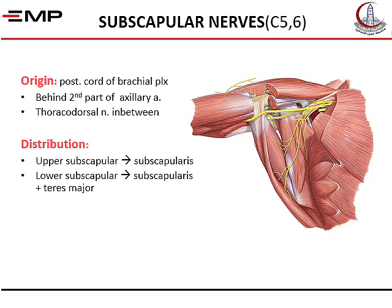The subscapular nerves are upper and lower subscapular. They arise from the posterior cord of the brachial plexus, behind the second part of the axillary artery, with the thoracodorsal nerve in between. The upper subscapular supplies subscapularis alone, while the lower subscapular supplies subscapularis and teres major.